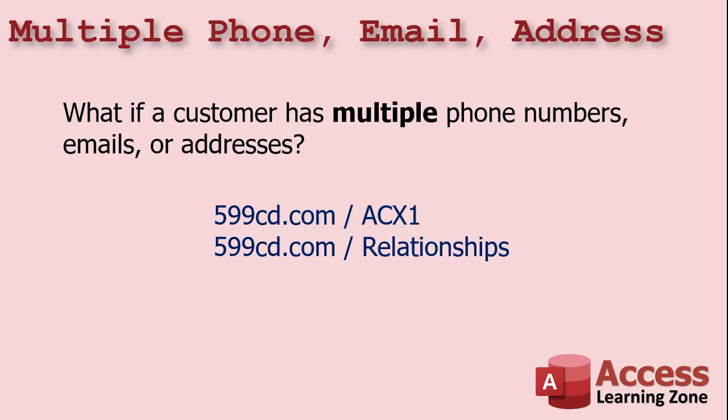What if a customer has multiple phone numbers, emails, or addresses? As my rule of thumb, if they have two, maybe three of something, then it's okay to make multiple fields in the same table — home phone, work phone, cell phone, not a problem; shipping address, billing address, not a problem. If it goes over three, then you really should consider making a second related table, which we're going to focus on in relationships in Access Expert Level 1 and touch on in Beginner 2.